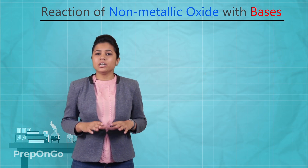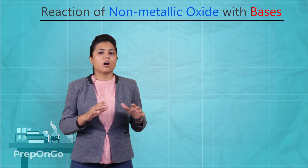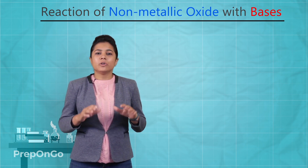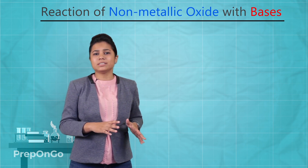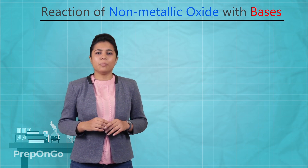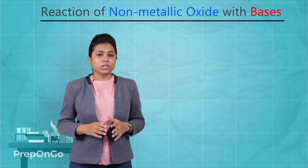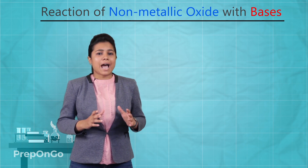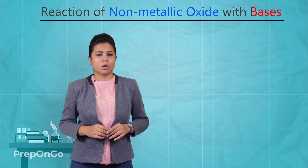We have now seen all the chemical properties of acids and bases — how acids reacted differently and how bases did too. In the next video, we are going to see what all acids and bases have in common.